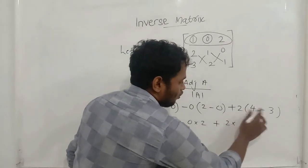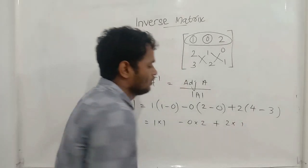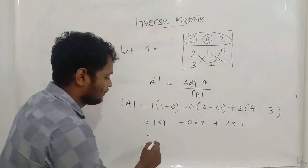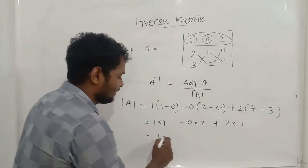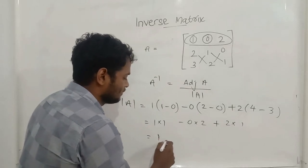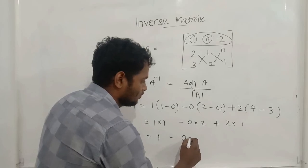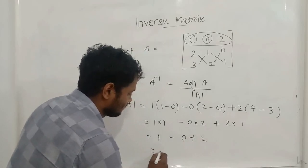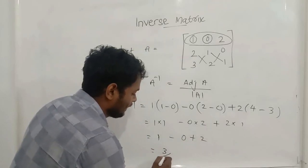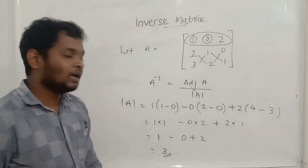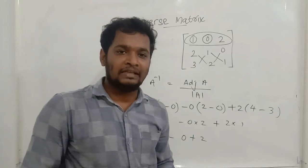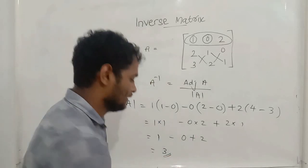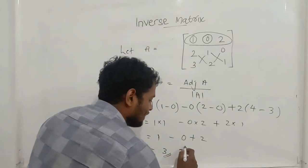1 minus 0, 1 minus 0, 2 minus 0, 2 plus 2, 4 minus 3 equals 1. Then: 0, 2, 0, 2, 3.